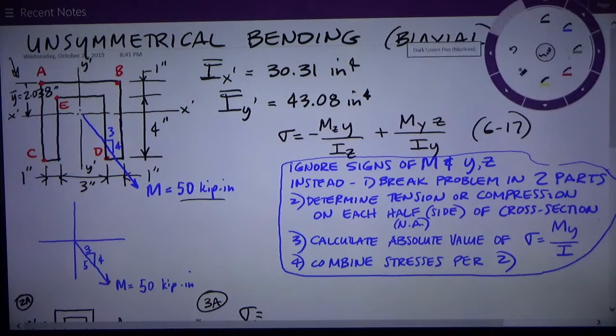Now the textbook has this formula, 6-17, that it uses for biaxial bending. But this formula is really, I don't like it. It's heavily dependent upon sign convention and the direction of moments and the direction of y and z distance.